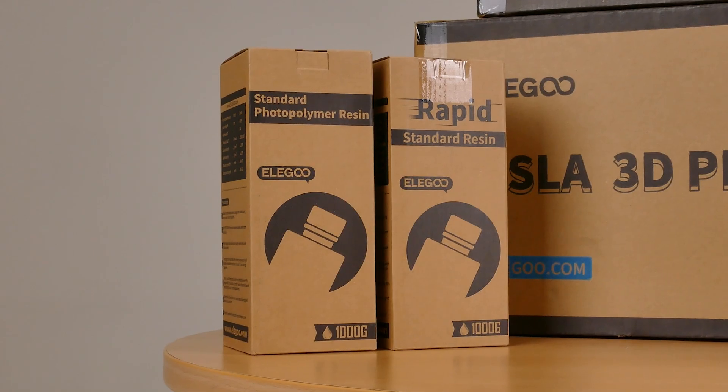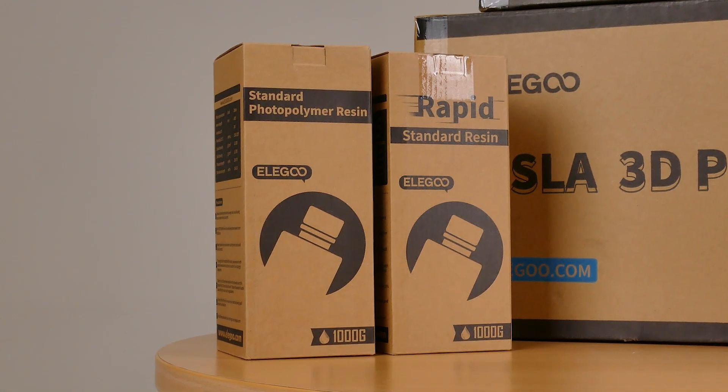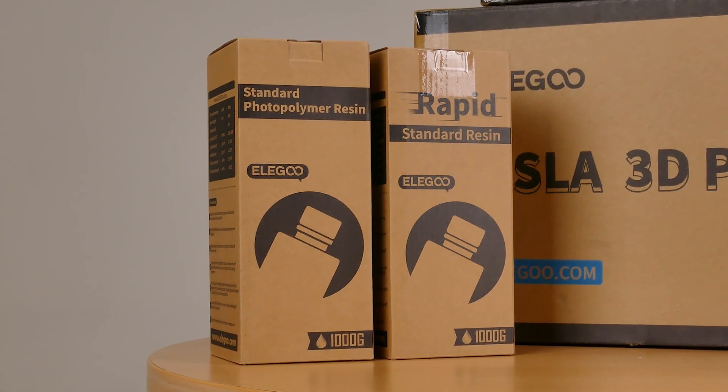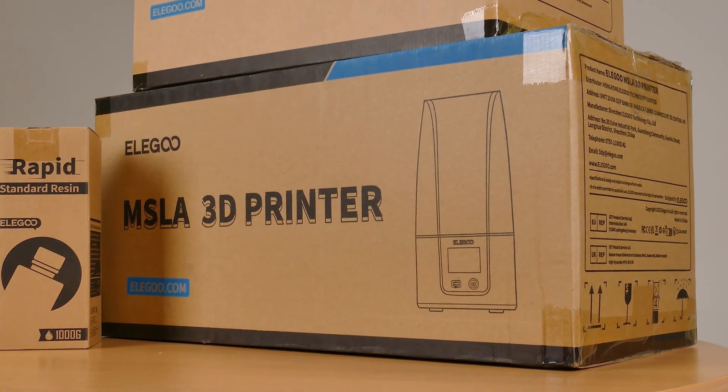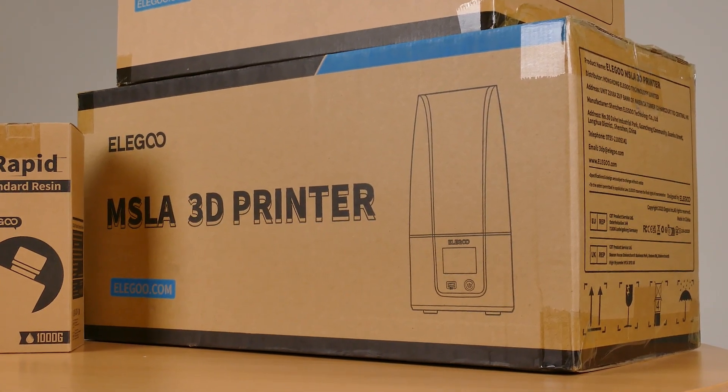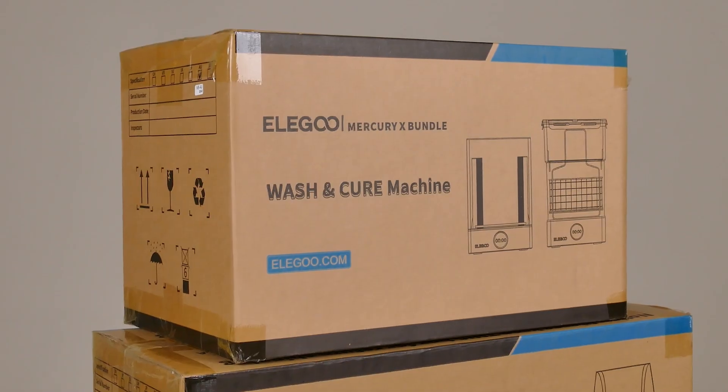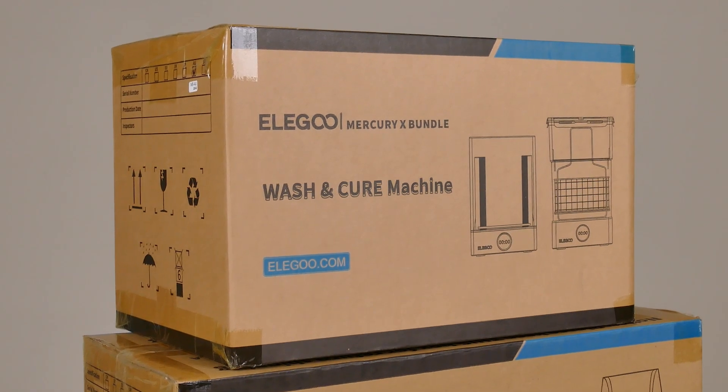Elegoo was very kind in sending me these two bottles of resin as well. This printer will work with majority of the resins available on the market. The wash and curing machine come in the same box and they've called it the Mercury X bundle.